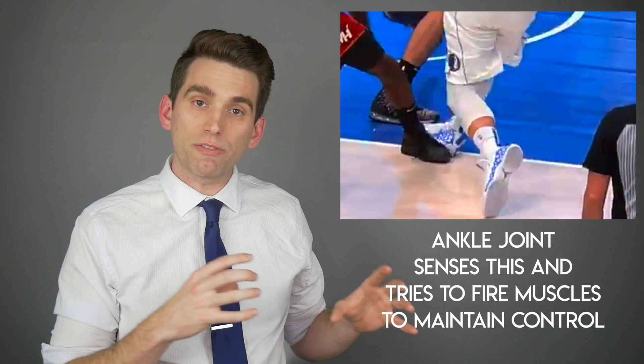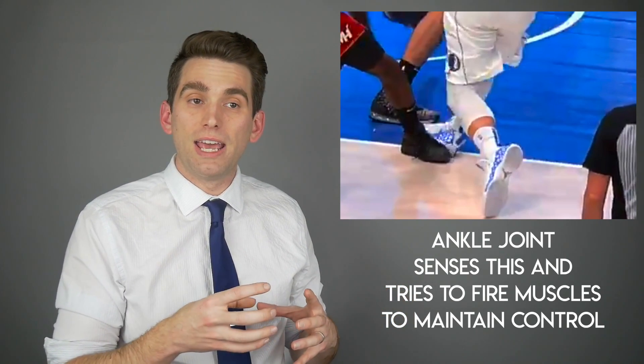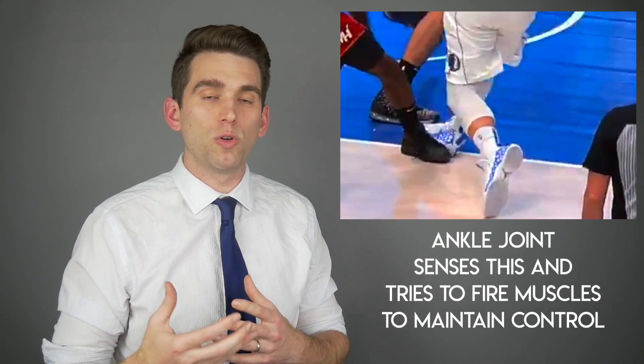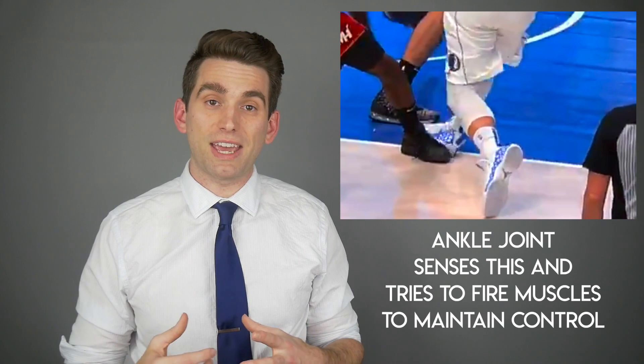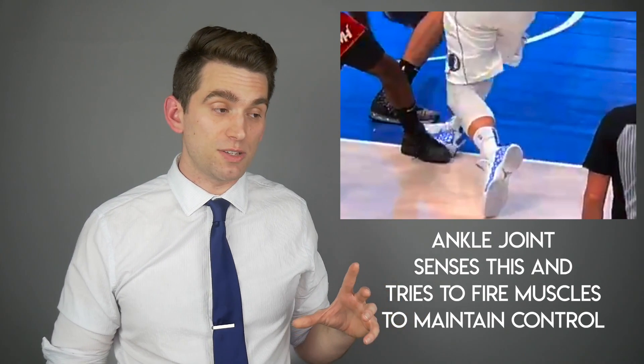Walking through the play: as Luka plants, his foot steps on Kendrick Nunn's foot, causing the ankle to roll. The body's neuromuscular system senses this and tries to fire the muscles around the foot to prevent it from rolling further — this is where ankle braces and higher-cut shoes can provide additional stability. But the muscles weren't strong enough to prevent the inversion injury. It's also good that the x-rays were reportedly negative, because the outer part of his ankle — the lateral malleolus, the fibular bone — almost looks like it smashes in, which could raise concern for a fracture. That has been ruled out.